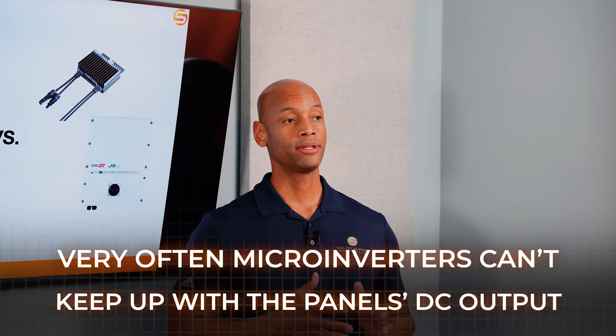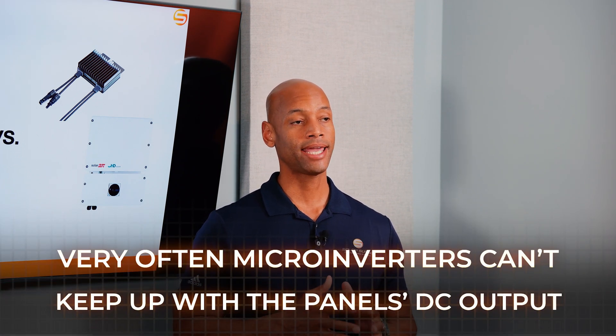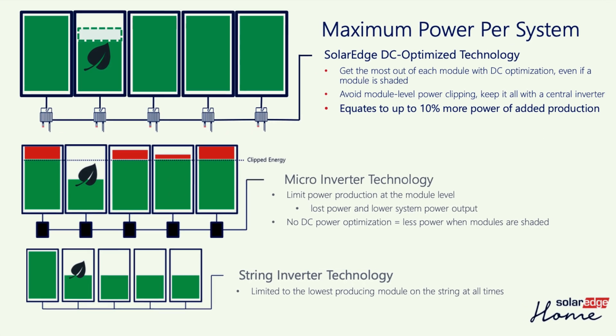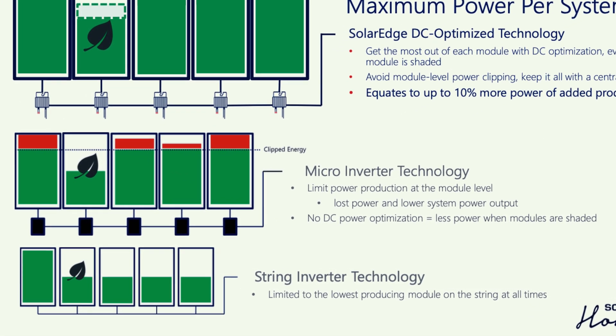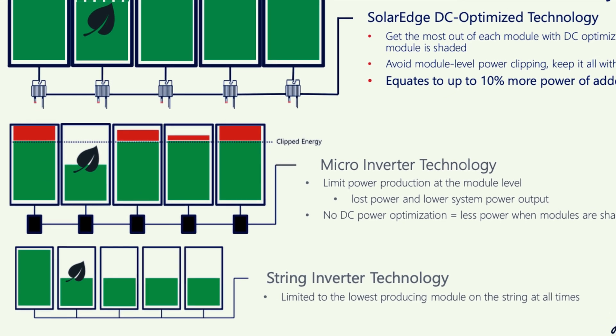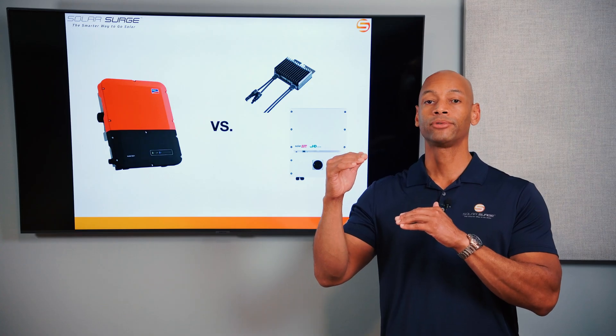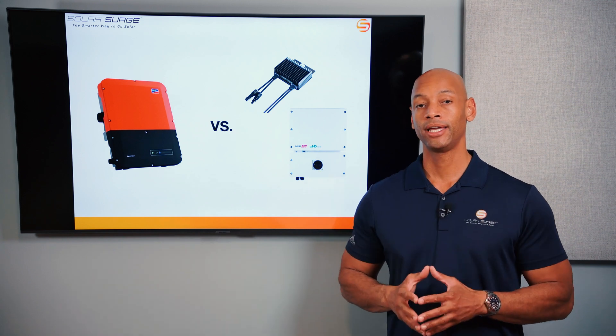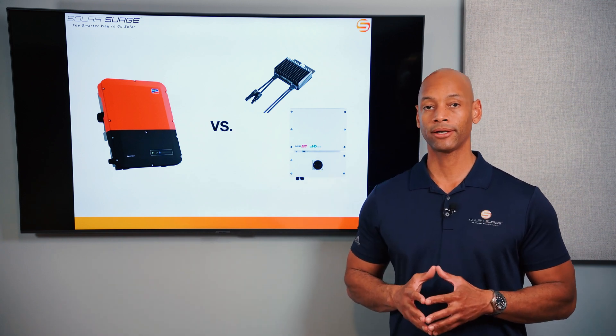Another limitation of microinverters — and this is more of a recent problem — is that solar panel size and power output has increased significantly in the past couple of years, while the microinverter's AC power output rating has not kept up with the solar panel power rating. This creates a situation called clipping loss, where the solar panel has the potential to output more power, but the inverter system it's connected to has reached its AC power limit, so you can't take full advantage of the energy that panel could produce.